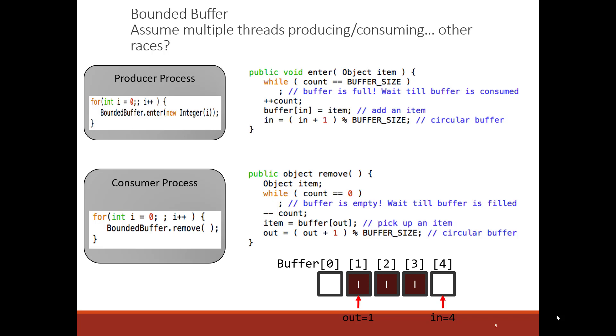Welcome back. Let me point out, there's a few race conditions here, but let me point out two of interest. Assume we have two threads entering objects. So, two producer threads. And assume that the buffer size is, the count is one less than the buffer size. So, there's room for one more object.